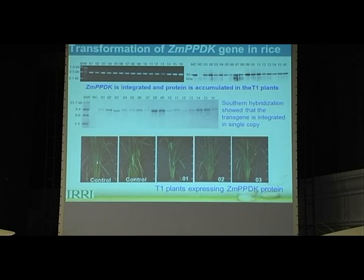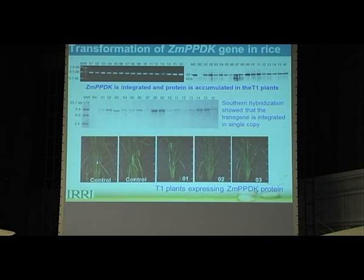We select our plants based on copy number and protein expression. Only events with one, two, or fewer than three copies are advanced to the next generation. For protein, we are not selecting too high or too low accumulation — we select lines showing 80 to 100 percent or similar to that of the maize protein level in rice, so that we don't expect any physiological impairment in the transgenic plants.